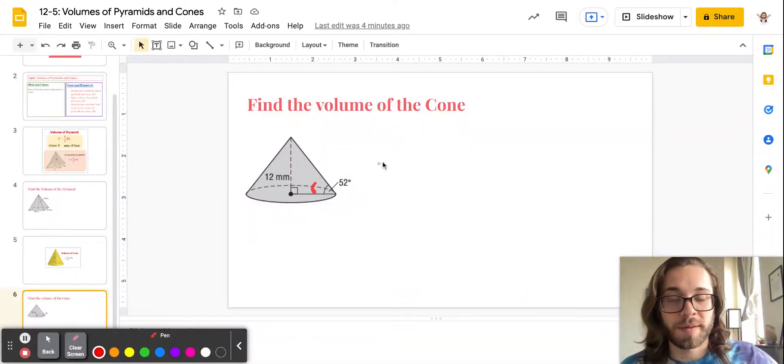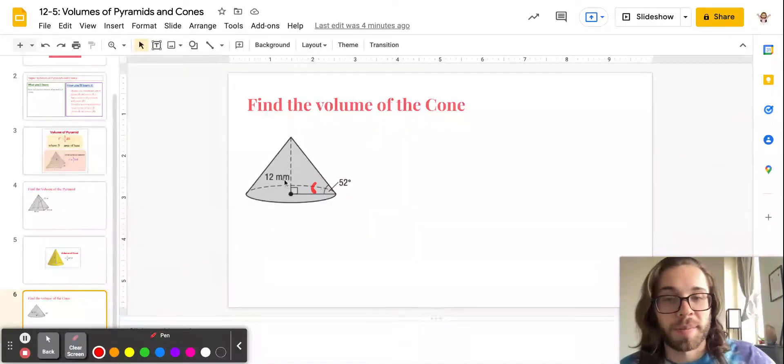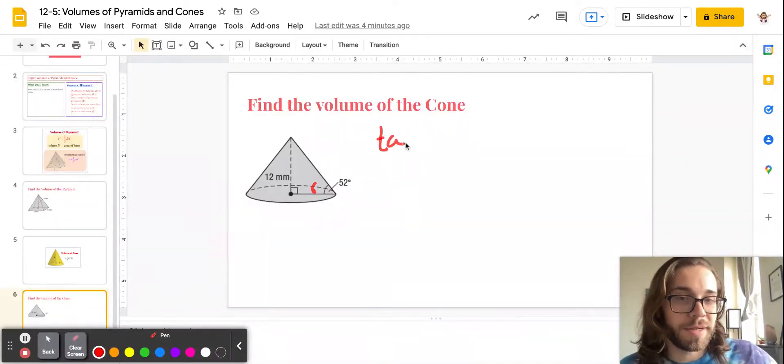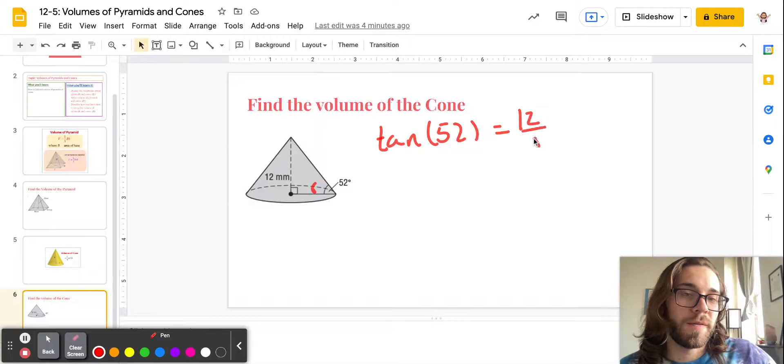Now, let's see. What do we got going on here? We have an opposite and an adjacent. Oh, so look at that. Tangent of 52 degrees is equal to 12 over the radius. So to solve for the radius, you're going to end up switching the spots of these when you multiply both sides by r, and then divide by tangent of 52.